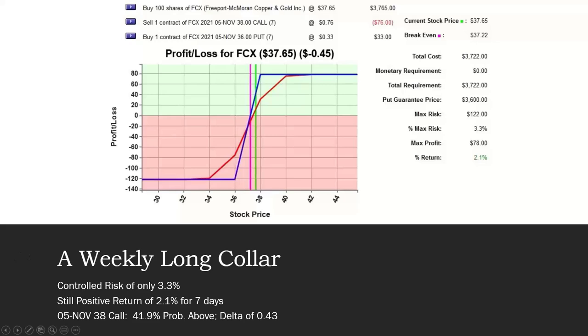An example of a weekly long collar from one of our default searches that came up today was on FCX, Freeport McMoran, the stock's trading at about $37.65. I might buy shares of Freeport at $37.65 and, for a weekly series, sell the 5th of November, 38 call for $0.76. At the same time, I'm going to buy a lower strike put, in this example, it's the 36 strike put for only $0.33. I'm taking the proceeds from that call, a little less than half of it, to purchase the put.